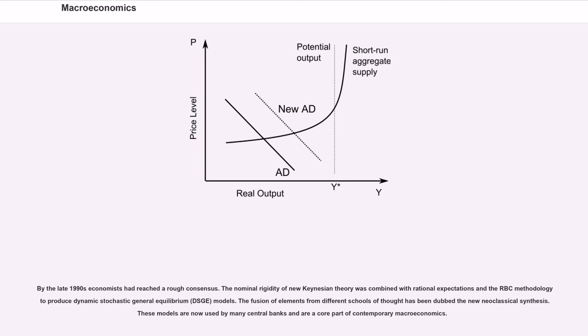By the late 1990s economists had reached a rough consensus. The nominal rigidity of New Keynesian theory was combined with rational expectations and the RBC methodology to produce dynamic stochastic general equilibrium (DSGE) models. The fusion of elements from different schools of thought has been dubbed the new neoclassical synthesis. These models are now used by many central banks and are a core part of contemporary macroeconomics.